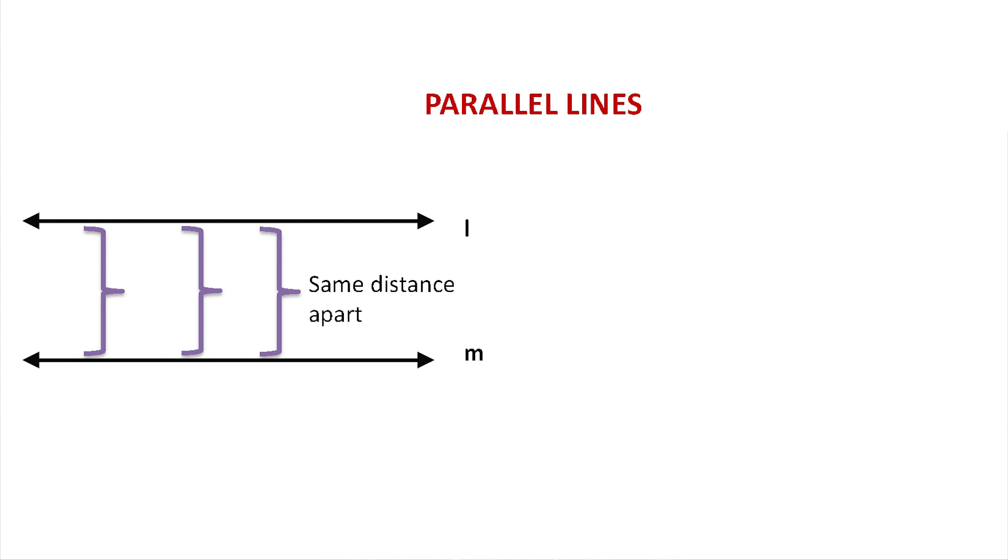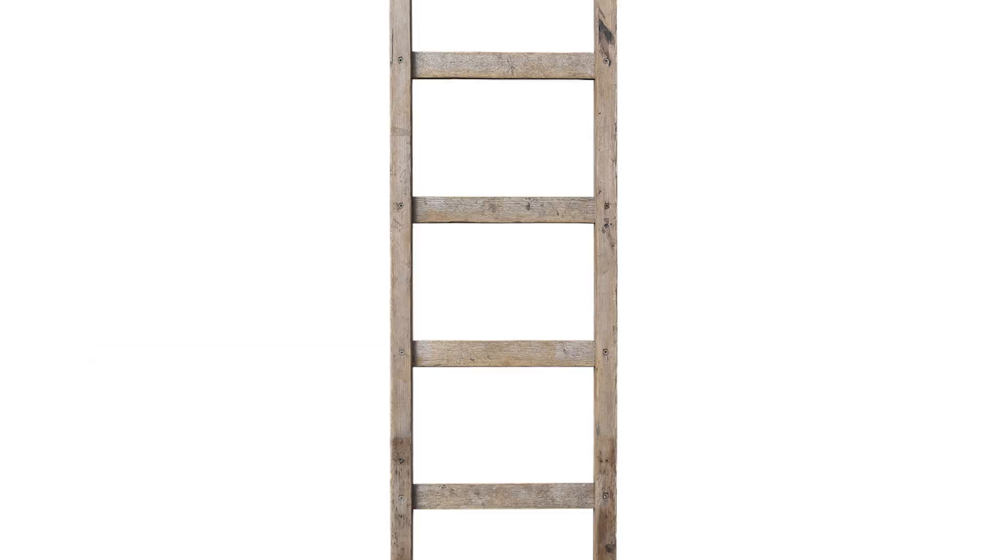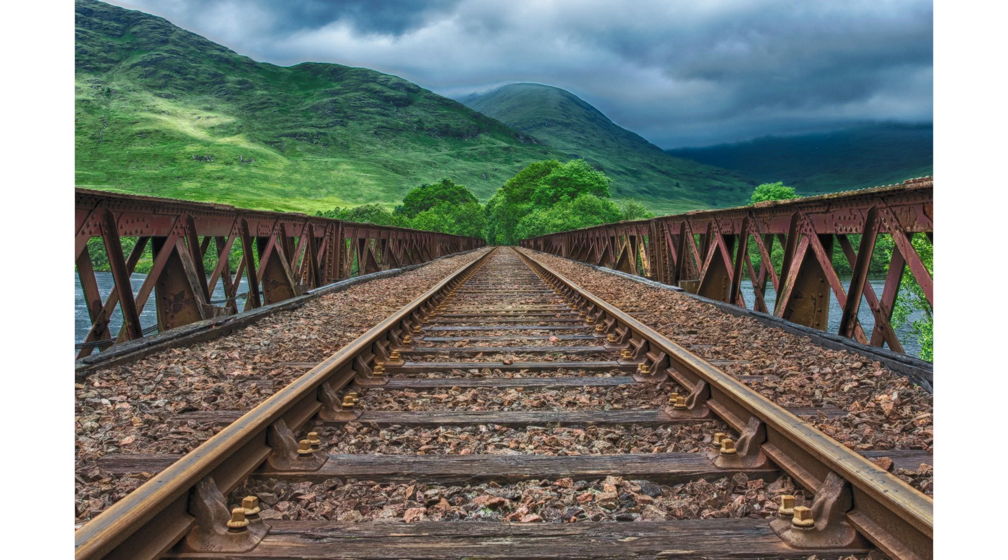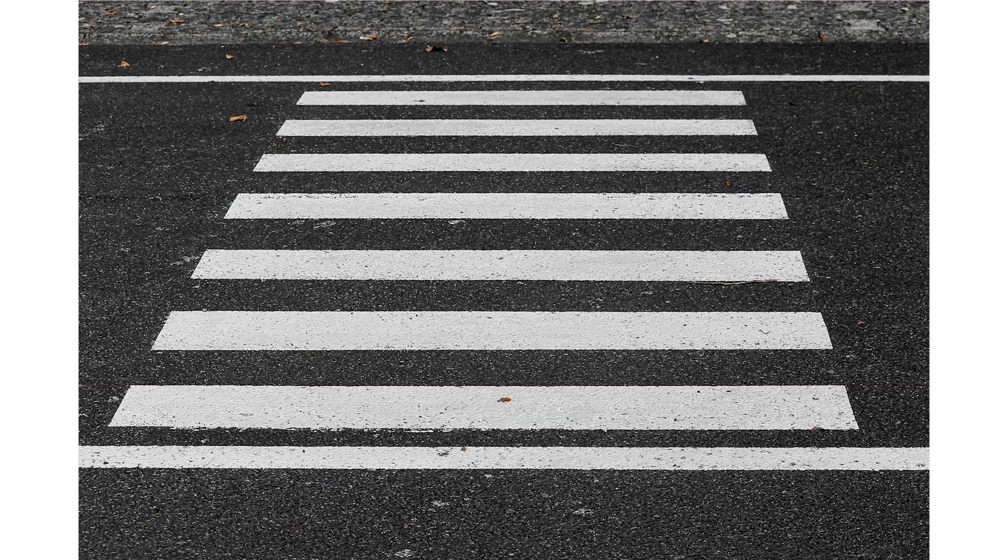An example of parallel lines are the steps of the ladder. You can see in the figure, the steps are parallel to one another, the railway track lines, they too are parallel, and the zebra crossing lines, they are also parallel.